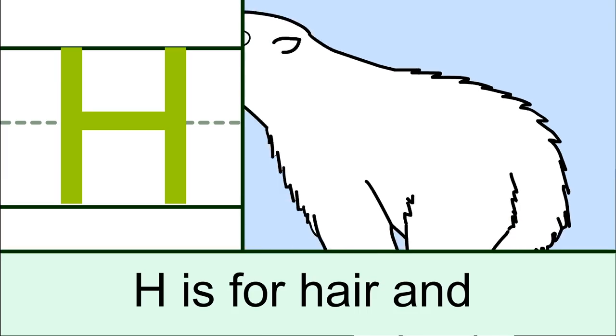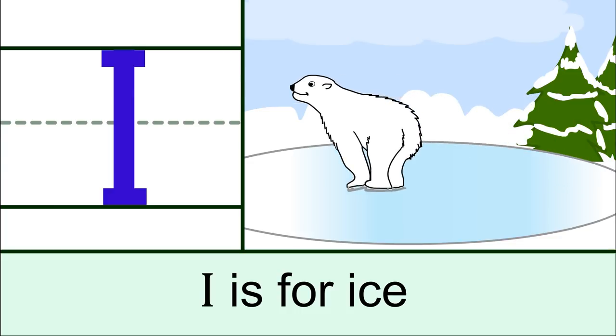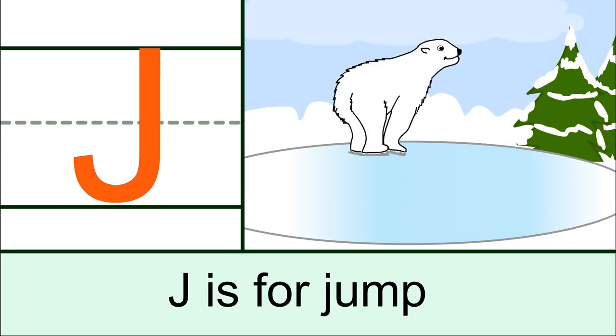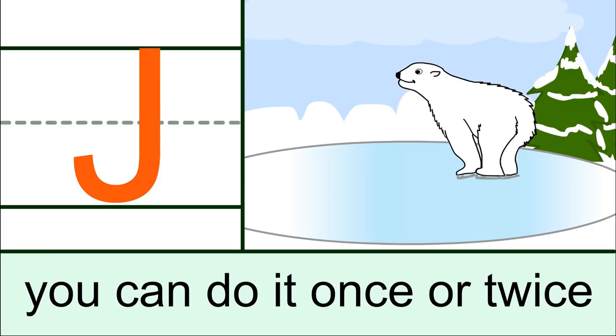H is for hair, I is for ice, J is for jump, you can do it once or twice.